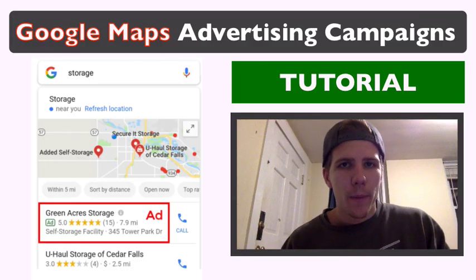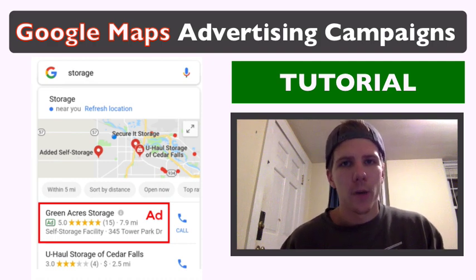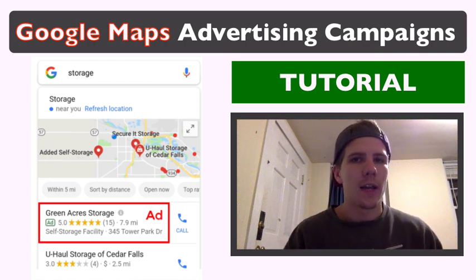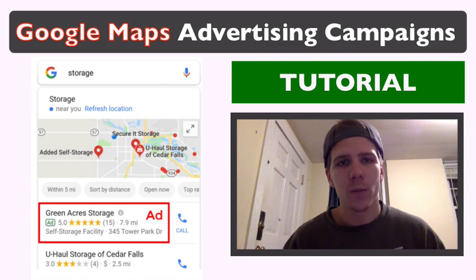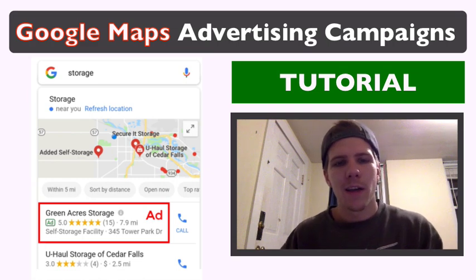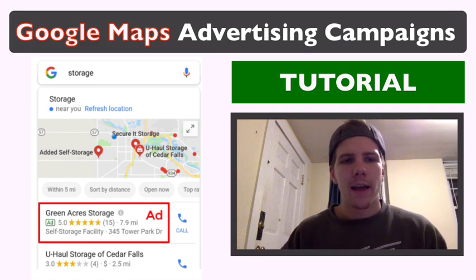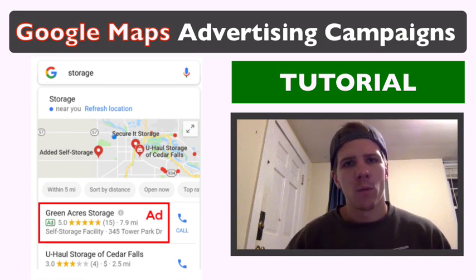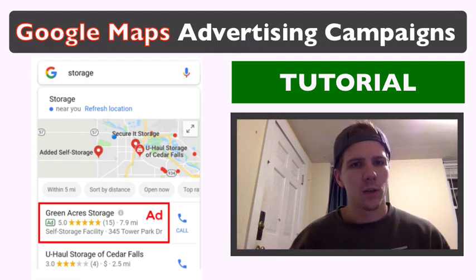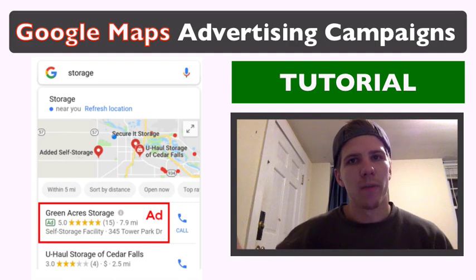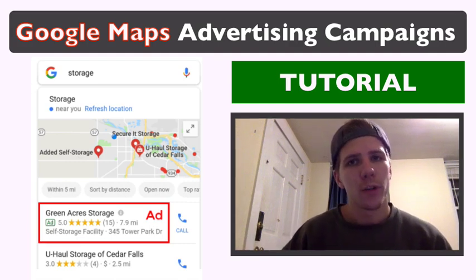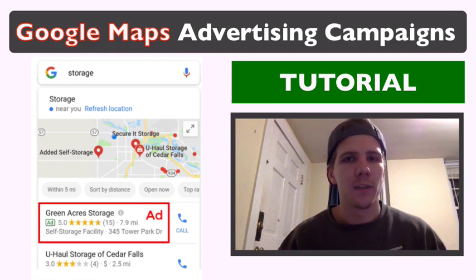The major thing to note about these ads is that you can't control when they show up, because they're simply just a location extension. So any campaign that you have a location extension associated with is going to show these ads in the map area. Google does that programmatically and you can't control whether it's showing or not. At this point in time, I don't believe you can choose to show it in one position or the other. You can't exclude the map area or exclude the search above the map area, which is unfortunate, but since this is brand new, Google is still making moves to change and improve it.